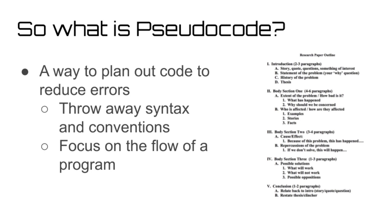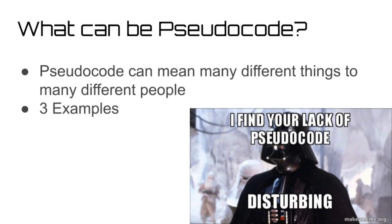So now that we know what pseudocode is, let's talk about how we write pseudocode. The best part about pseudocode is that it can take the form of many different things for many different people. Since there are probably hundreds of different methods of writing pseudocode used by computer scientists today, I'd like to focus on three popular ones which I believe to be extremely useful.